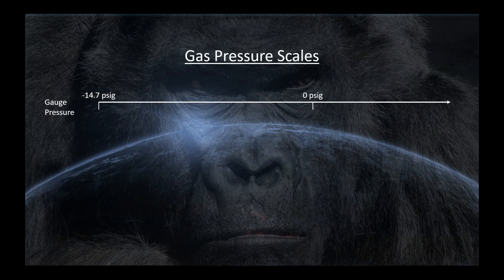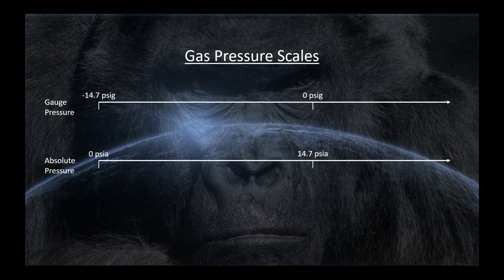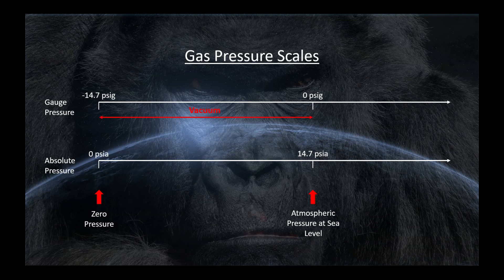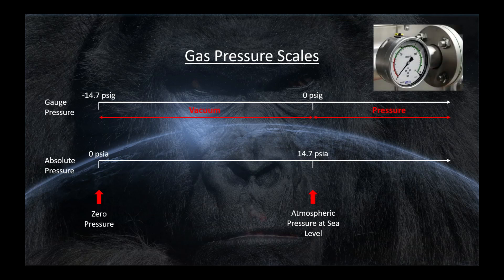Now I want to talk about pressure scales, because I think this is something that totally confuses a lot of people. We have two pressure scales: gauge pressure and absolute pressure. The difference between these two scales is the location of zero. On the absolute pressure scale, zero is literally zero absolute pressure — that point below which there is nothing; you cannot go below zero absolute. On the gauge pressure scale, zero is atmospheric pressure. A gauge pressure gauge indicates zero when not connected to anything pressurized, referenced to atmospheric pressure, so it will always show zero even as atmospheric pressure varies.